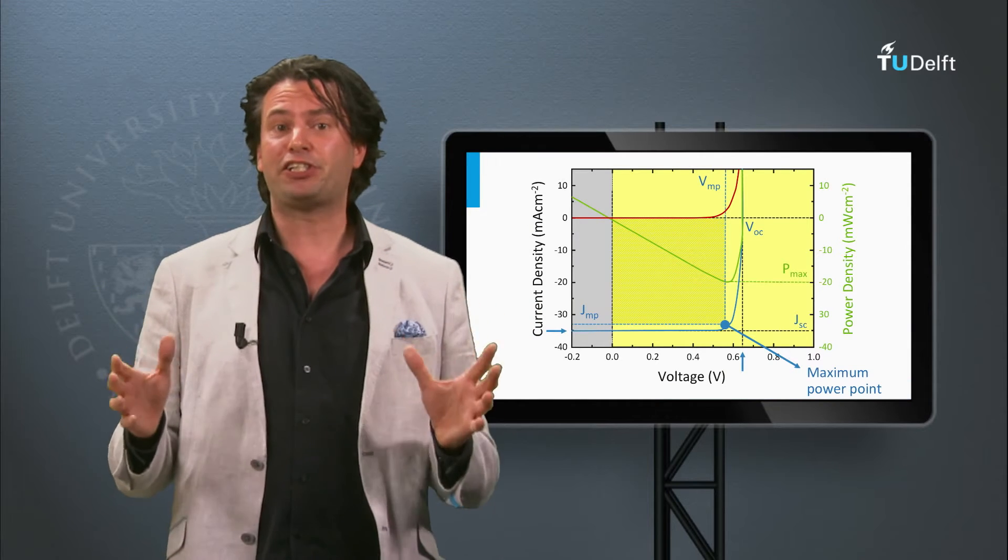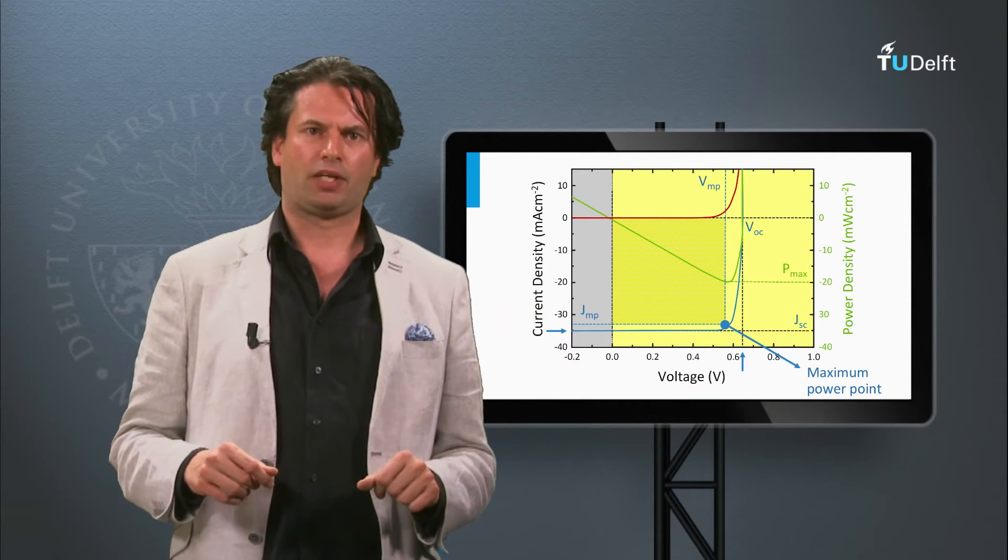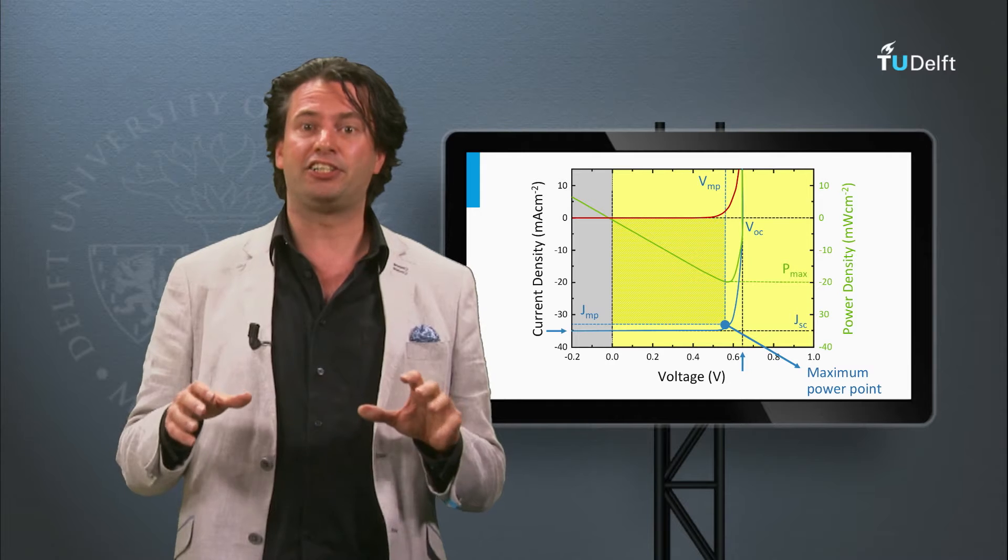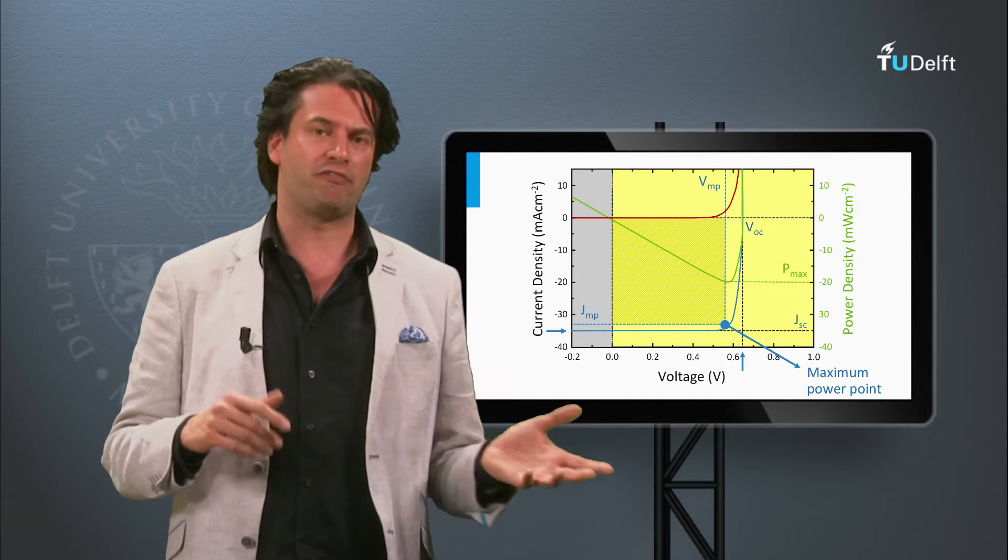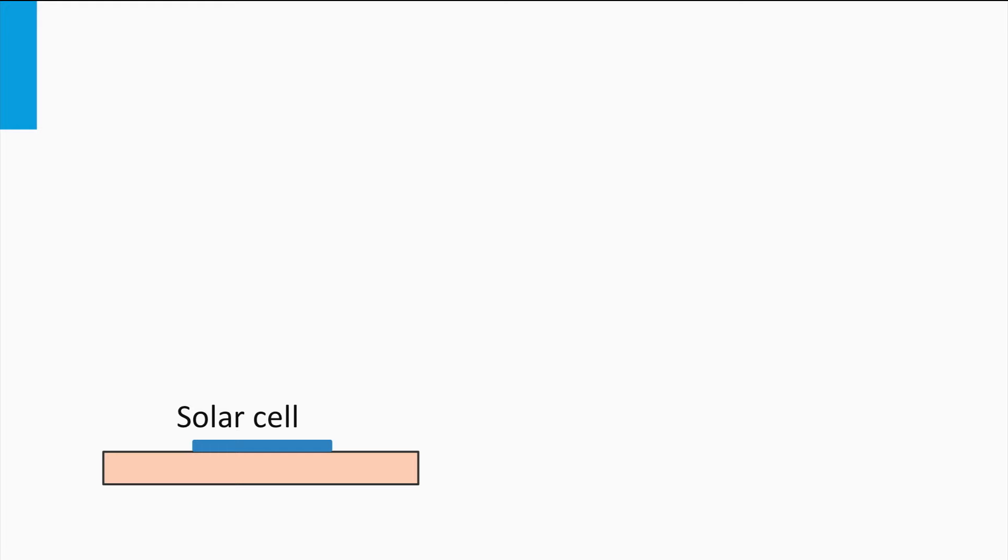We are going to measure the efficiency of a solar panel. We do this by measuring the JV curve and its external parameters as discussed in the previous block. How does such experimental setup look like? It consists of several components.